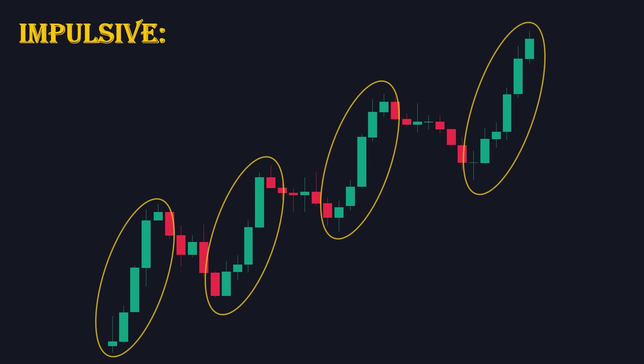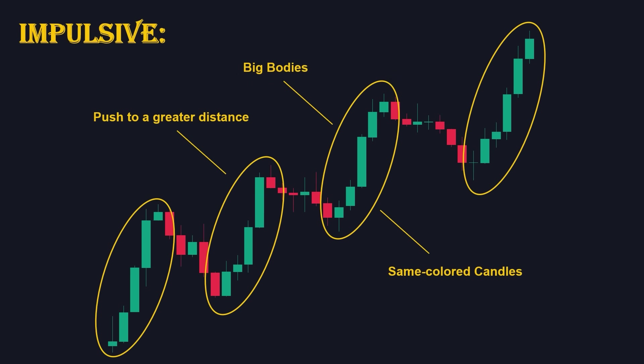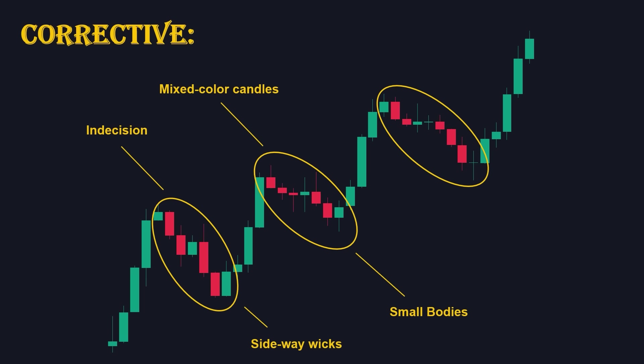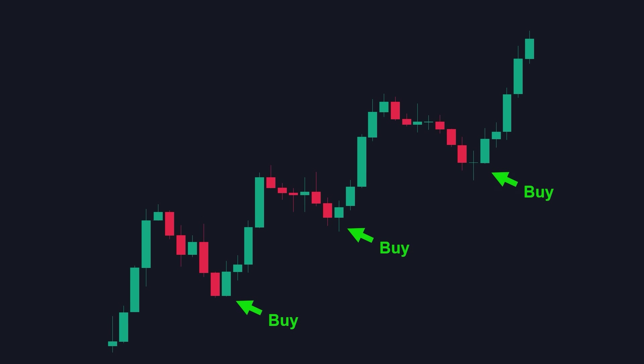Impulsive waves often push the price a greater distance with momentum, characterized by same-colored candles with large bodies. In contrast, corrections represent indecision on the chart, marked by mixed-colored candles with small bodies and sideways wicks. Identifying the end of a pullback and the start of an impulsive move can be highly profitable, as it enables traders to capitalize on potential buying or selling opportunities in the market.